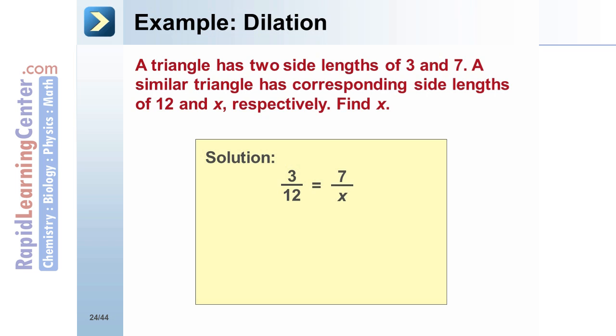to the ratio with an unknown: 3 to 12 equals 7 to x. Cross multiply to get 3x equals 84. Divide both sides by 3 to get x equals 28.